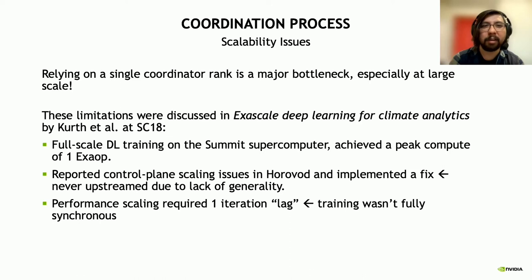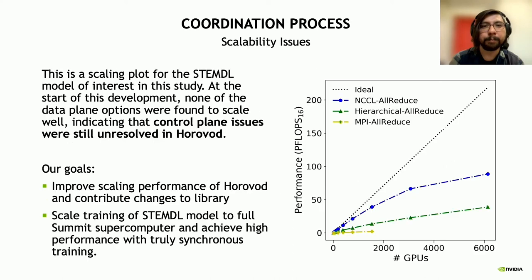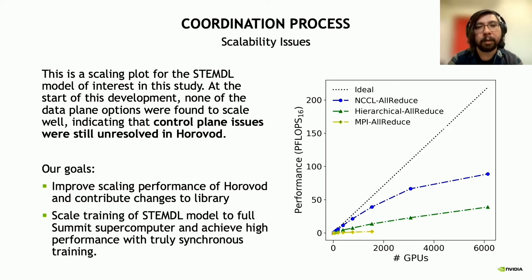Additionally, the scaling performance they achieved required a one-iteration lag, meaning they allowed the gradients to go stale for one step, which is not common in deep learning practice—in other words, the training wasn't fully synchronous. On the right, we show a scaling plot of our model in petaflops versus number of GPUs using different available Horovod data plane backends. The takeaway is that at the beginning of this study, none of the available options in Horovod scaled well, indicating that control plane issues were still unresolved.